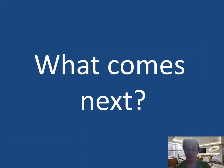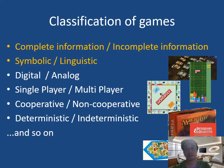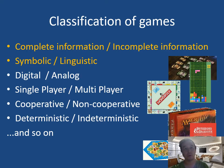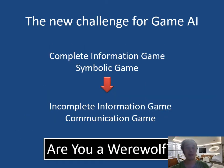So what comes next is our focus. There are several different kinds of games: complete information games versus incomplete information games, symbolic games and linguistic games, digital and analog games, single player and multiplayer games, cooperative and non-cooperative games, deterministic and non-deterministic games. We are focusing on the above two factors: incomplete information games and linguistic games. We propose a new challenge for game AI, moving from complete information symbolic games to incomplete information communication games.